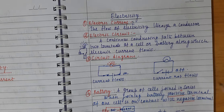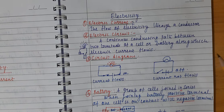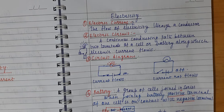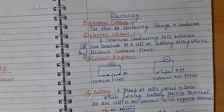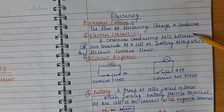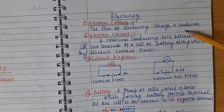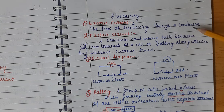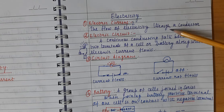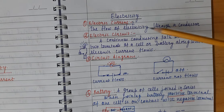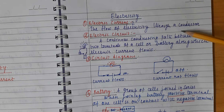The first topic is: what is electric current? The flow of electricity through a conductor is called electric current. A conductor is a substance which allows electric current to flow through it. So, the flow of electric current through a conductor is called electric current. Conductors allow electricity to flow.